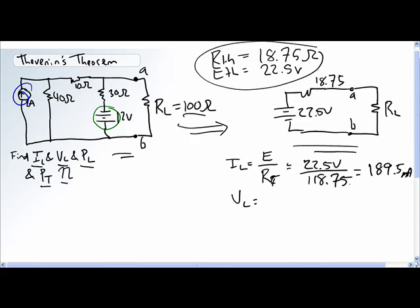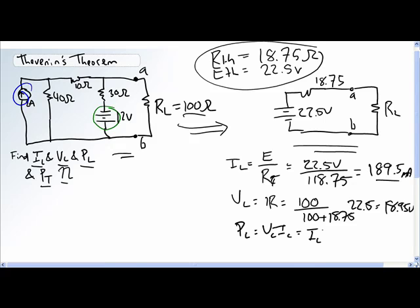Voltage to the load, well, we could use the current right here, IR, but we could also use the voltage divider rule. So, 100 divided by 100 plus 18.75 times 22.5 gives us 18.95 volts. What is the power delivered to the load? The power delivered to the load is voltage to the load times current to the load or IL squared R or VL squared over R. Either way, it should be equal to 3.591 watts.